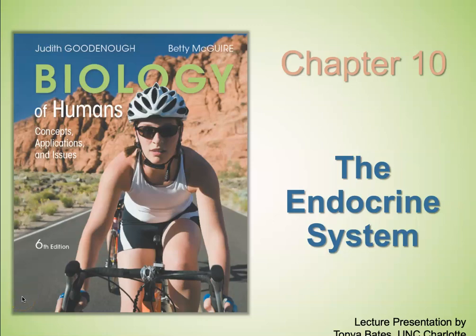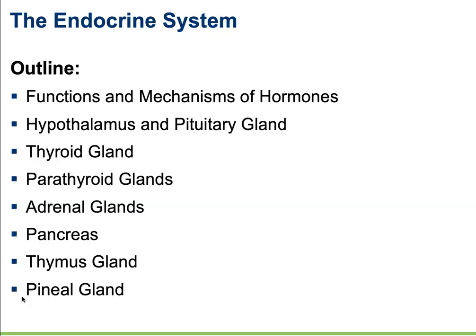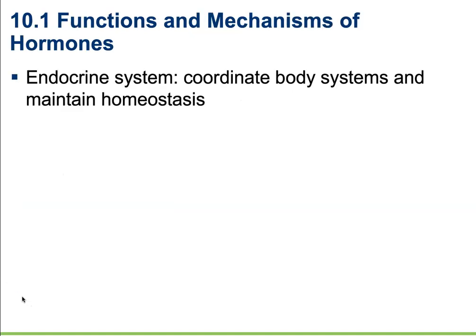Chapter 10, the endocrine system. In this chapter, we're going to cover the functions and mechanisms of hormones, and then we're going to go into each of the individual glands. We're going to focus on the hypothalamus and pituitary gland, thyroid gland, parathyroid, adrenal, pancreas, thymus, and pineal gland. But we're going to start off by looking at an overview of the functions and mechanisms of hormones.